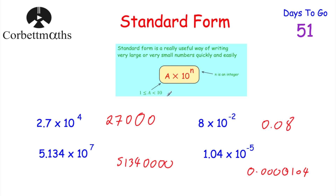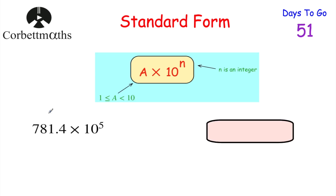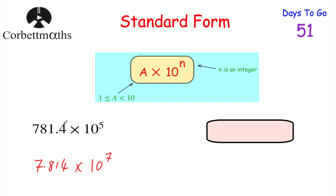Sometimes you might be given a number that almost looks like it's in standard form — for example 781.4 × 10⁵. This isn't in standard form because the number at the front must be between 1 and 10, but 781.4 is much bigger. So I write 7.814 instead — that's between 1 and 10. I've made the front number 100 times smaller by dividing by 100, so I must multiply the power part by 100, increasing the power by 2. That gives 7.814 × 10⁷.